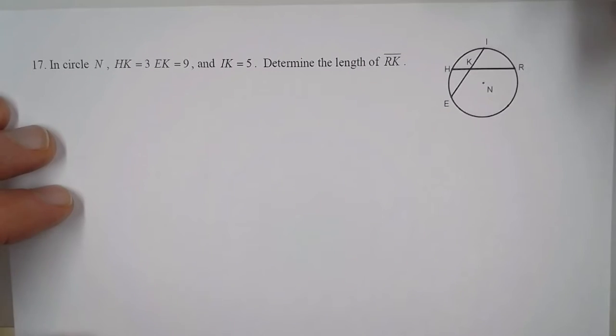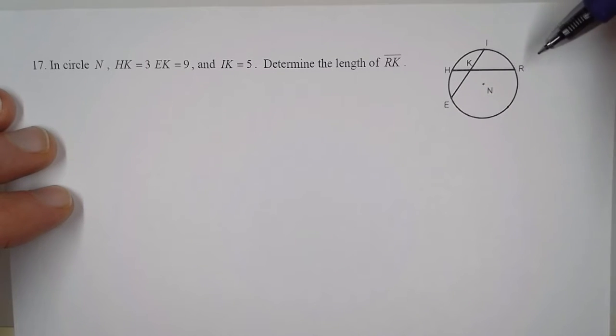In this problem, they give us circle N. HK is 3, EK is 9, and IK is 5. We want to determine the length of RK.